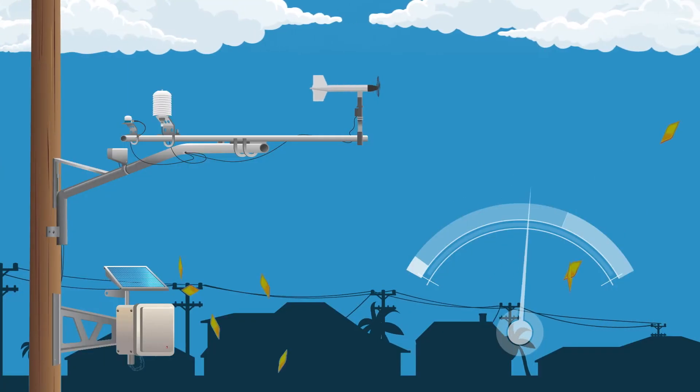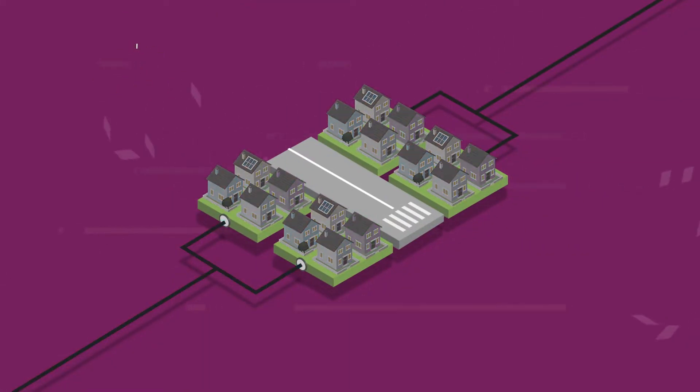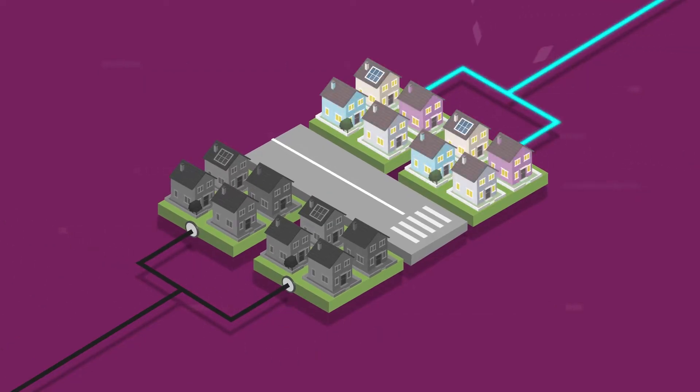As the wind speeds get close to dangerous thresholds, we ask: do we need to turn off power to some customers to protect their neighborhoods? And what can we do to minimize the number of customers who lose power?